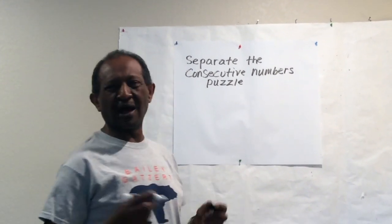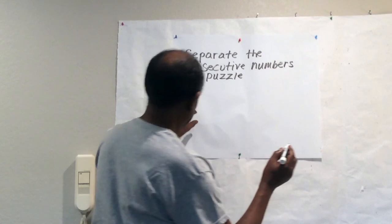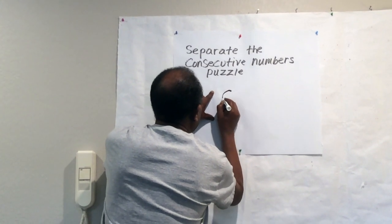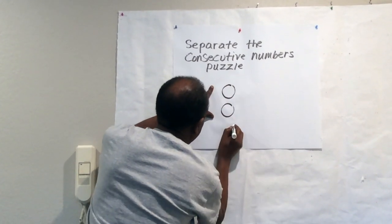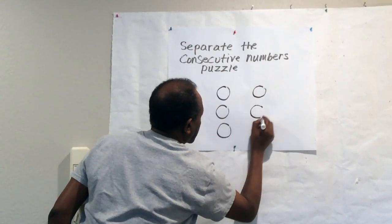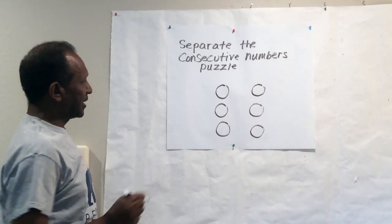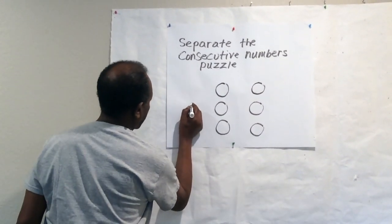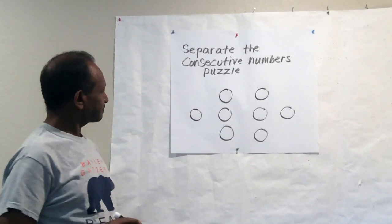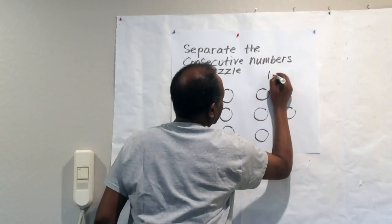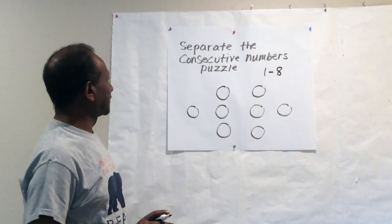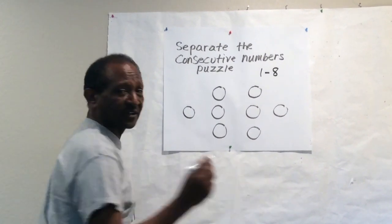Here I'm going to show you how to draw this puzzle, so watch me carefully. First, I draw three circles parallel to each other and then three more circles on this side, and then two more circles here in the middle. Now I have eight circles. I'm going to fill these eight circles with eight numbers, but there is a rule.